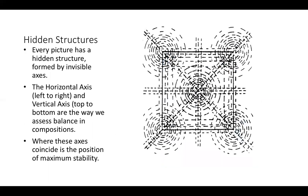Let's move on to how we assess balance in a painting. A large factor that determines this is the hidden structures of shapes. Every picture has a hidden structure formed by an invisible axis. The horizontal axis runs through the centre from left to right, and the vertical axis runs through the centre top to bottom — these are how we assess balance in composition. There are also two diagonal axes, but they aren't the dominant ones. The two we want to talk about are the vertical and horizontal. Where these axes coincide is the position of maximum stability, represented by a bullseye effect radiating outward — becoming less and less stable moving along those axes.